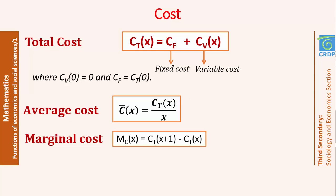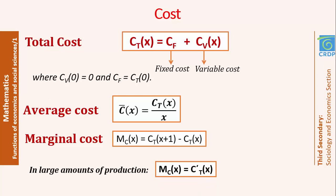The marginal cost, denoted MC(x), is given by CT(x+1) minus CT(x). It's the cost of the (x+1)th unit — so after producing x units, the cost of producing the next unit is the marginal cost. For large amounts of production, this marginal cost becomes the derivative of the total cost function, which is more commonly used in exercises.